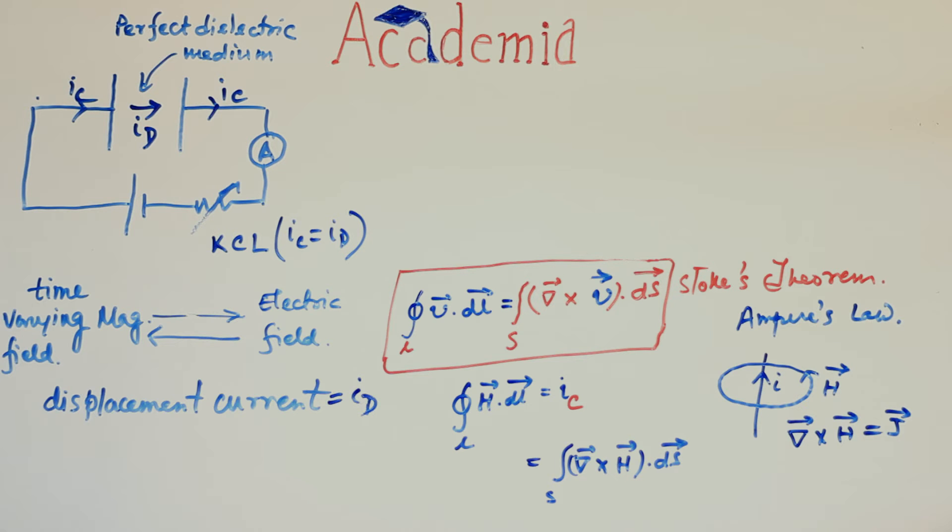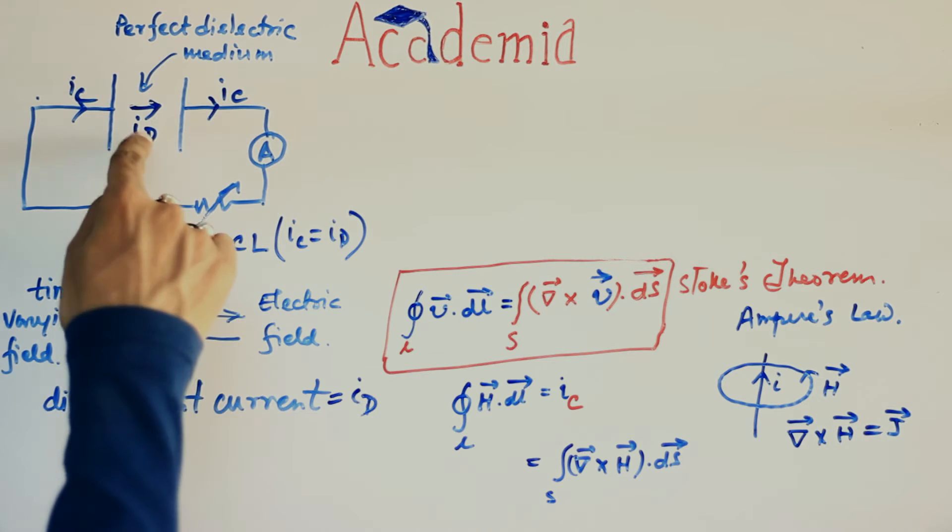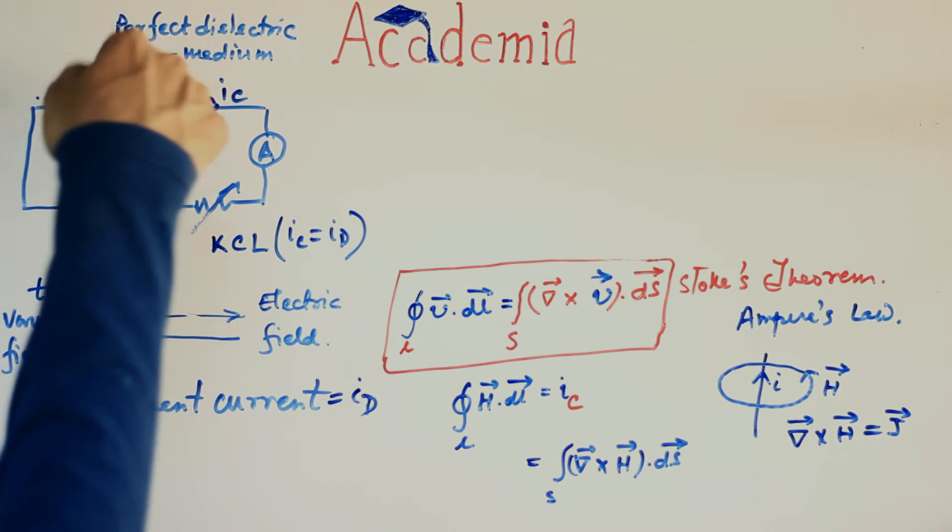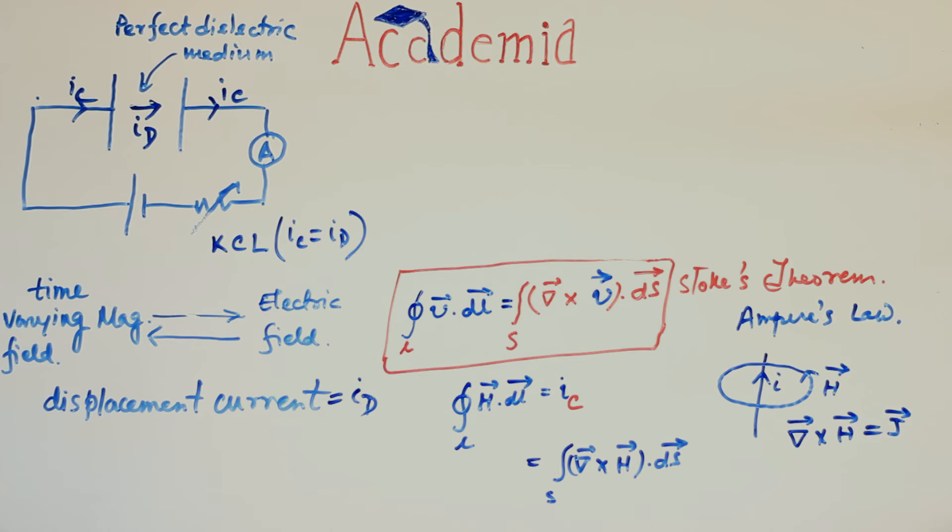But dielectric space itself being non-conductor of electricity cannot conduct conduction current through it. The displacement current ID may serve the purpose by saying this current is responsible for the production of magnetic field there. But the truth is, this is just a fictitious current. It does not exist in reality. Then how come magnetic field was produced there in spite of absence of unreal current?